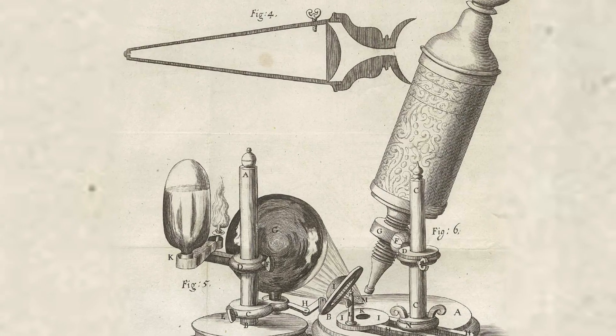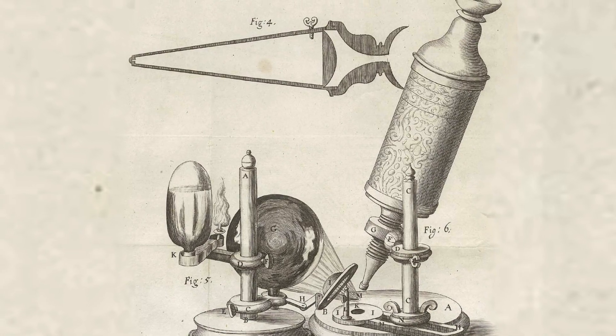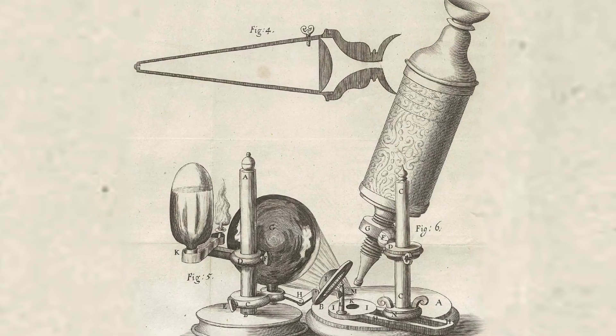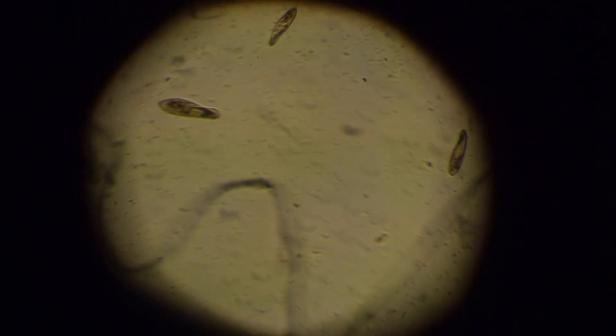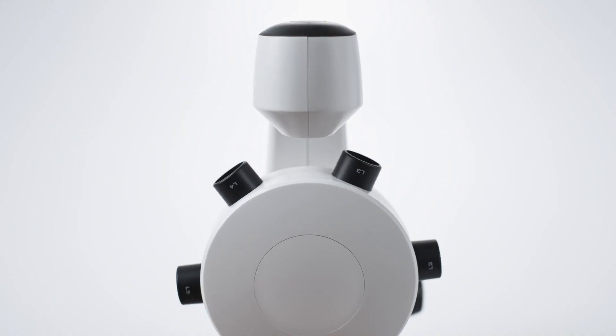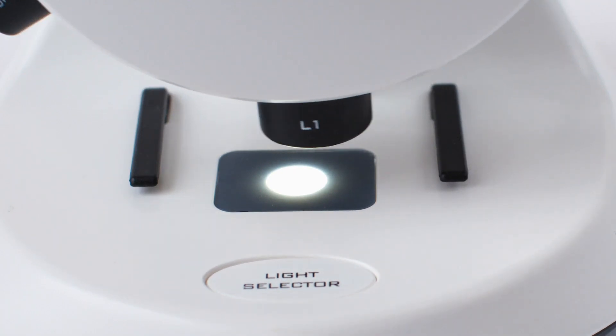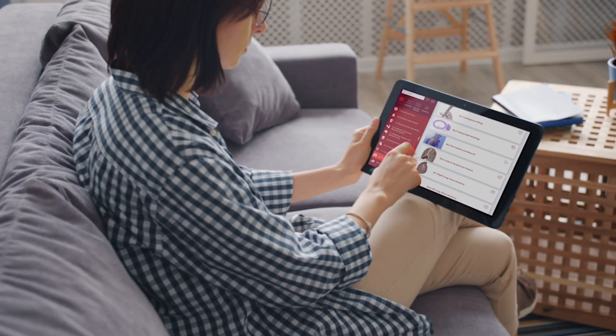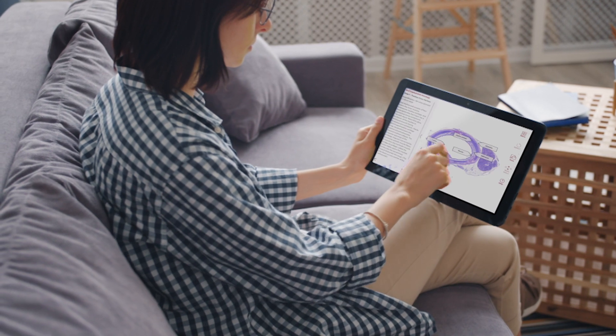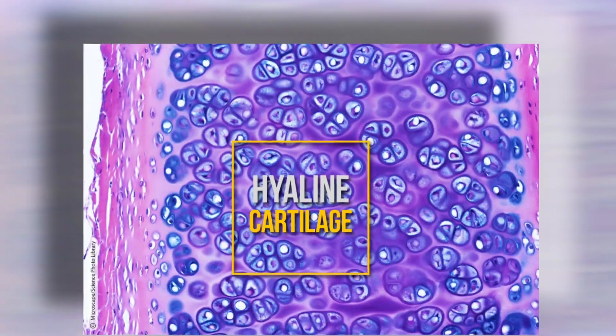When we began using microscopes, our world got a whole lot bigger. Scientists in the 1600s used the first optical microscopes to examine bacteria in drops of water and cork cells. For those who don't have access to today's powerful microscopes, digital microscopy is a comprehensive alternative.